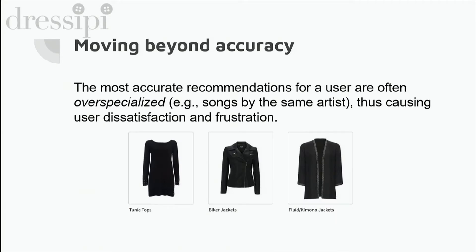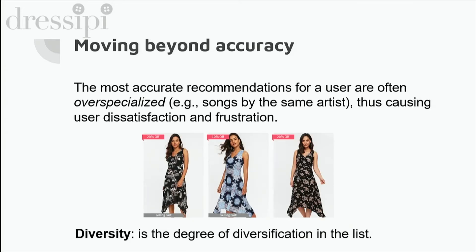However, researchers realized that accuracy is not enough for evaluating the performance of a recommender. The most accurate recommendations for a user are often too similar to each other and risk becoming redundant. Think about YouTube recommendation lists, or a list of 10 black garments displayed to the user at the same time, or a list of only floral garments because they were popular last week. So it is worth considering additional metrics such as novelty and diversity — the degree of diversification in the list provided to each user — which has been proven to reduce the overfitting issue and improve the quality of user experience.